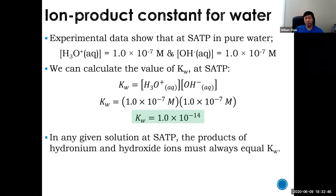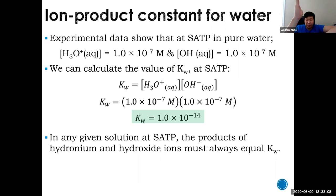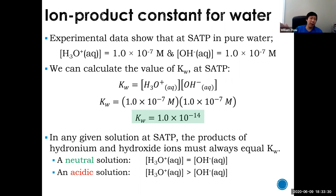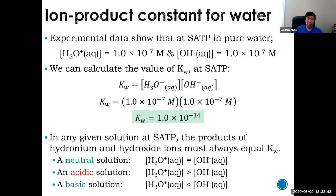Any solution at SATP will have hydronium times hydroxide always equal to Kw. This also means that if you increase the amount of one, the other will decrease, because they must multiply to equal a constant. If you have a neutral solution, they're equal — both 10⁻⁷. If you're acidic, you have more H₃O⁺ than OH⁻. If you have a basic solution, you have more hydroxide than hydronium. Only if they're equal do you have a neutral solution.